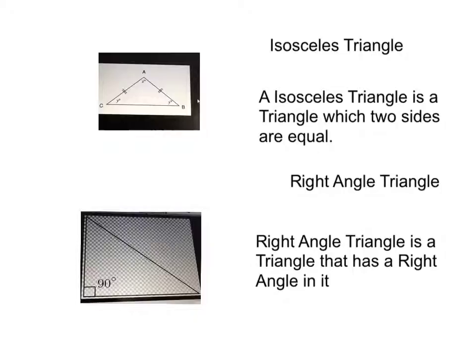Isosceles triangle: isosceles triangle is a triangle with two sides are equal. Same, same, and different.